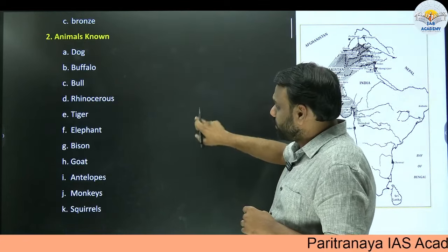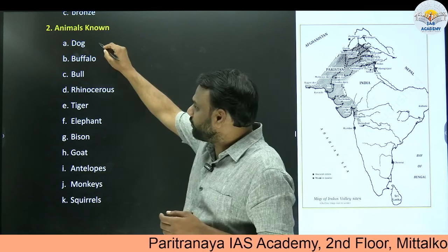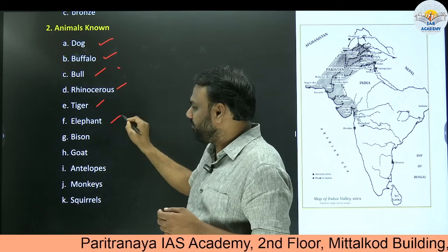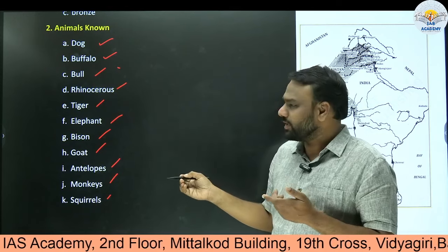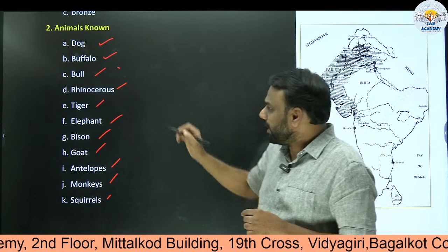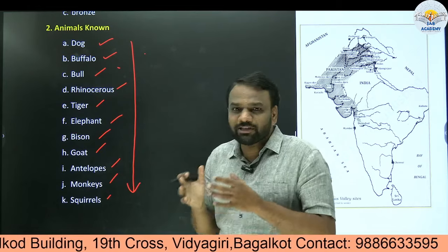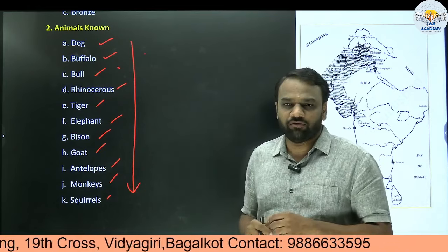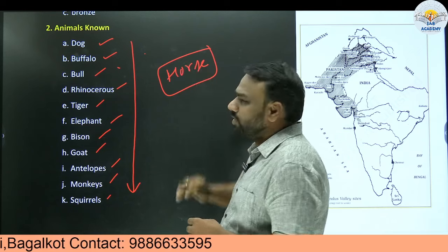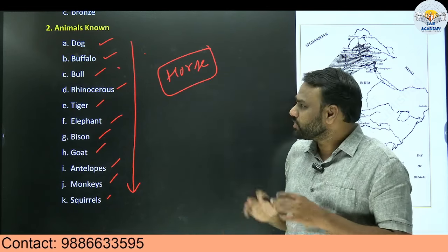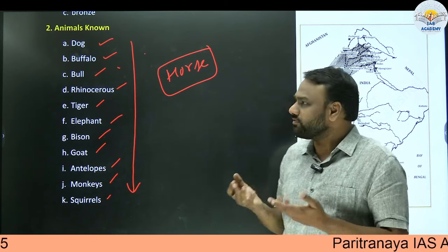Next, animals. Through various art objects of the Indus Valley, we come to know that they were aware of buffalo, bull, rhinoceros, tiger, elephant, bison, goat, antelopes, monkeys, and squirrels. After looking at all these animals, the next question is: which important animals of modern day was the Indus Valley civilization unaware of? One thing that stands out is horse. Previous question papers have focused on horse at least two or three times. Indus Valley civilization people were unaware of the existence of an animal called horse.